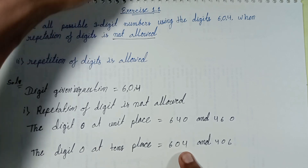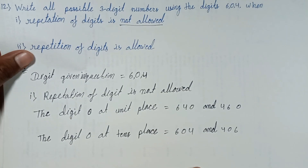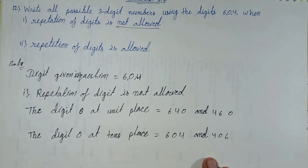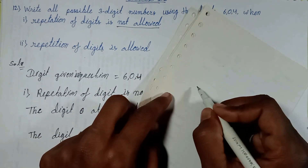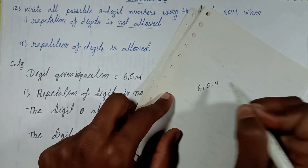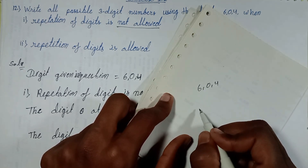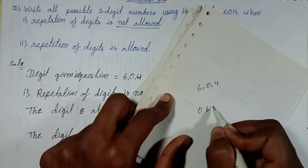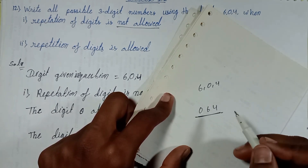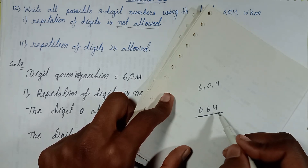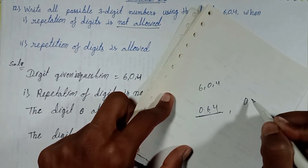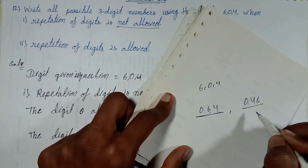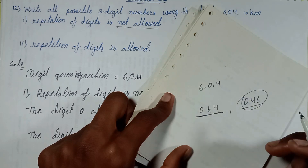Zero is not allowed in the hundreds place. Let's solve in a rough phase — if we write zero at hundreds place, for example 0, 6, 4, this is not a three-digit number, it is only a two-digit number. So zero cannot be placed at the hundreds place.